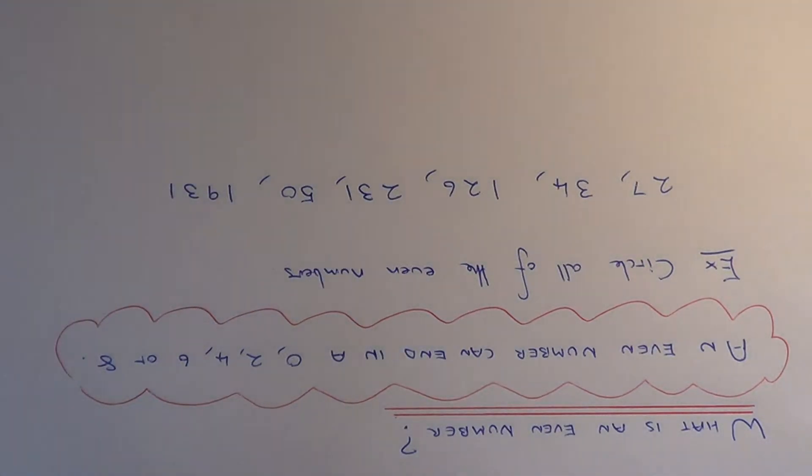And if it ends in these numbers, it's definitely going to be an even number. So let's have a look at a little example here. We've got a circle of all of the even numbers, so we just need to look at the last digit of each number.